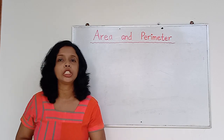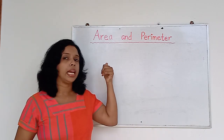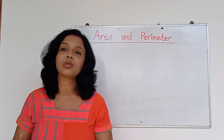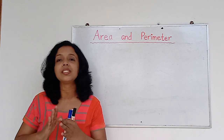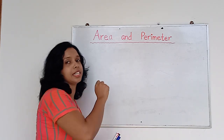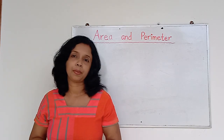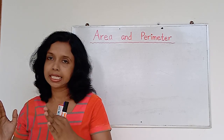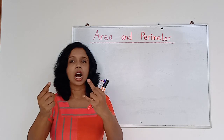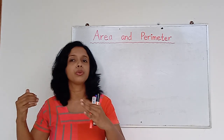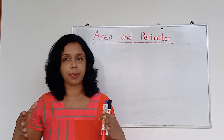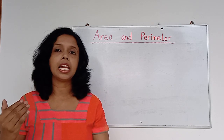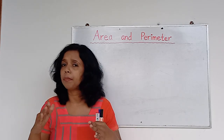Now you may think she wanted to explain about area and perimeter, but she is talking about her land. Yes, there is a relationship between these two terms and my land. Area is the amount of space covered by the outer boundary of a 2D shape — that is, a flat, two-dimensional shape.